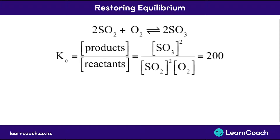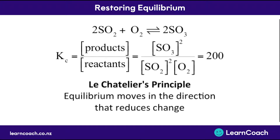Will Kc stay the same or will it change? The rule we need to know is Le Chatelier's principle, which says equilibrium moves in the direction that reduces the change. So if we increase the amount of oxygen, equilibrium would try to reduce that change and therefore make more product — more SO3 — to use up the extra oxygen, moving the equation to the right in the forward direction.